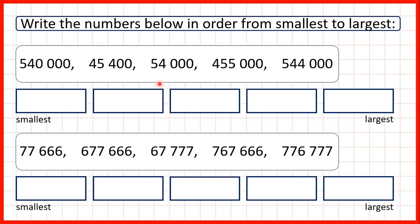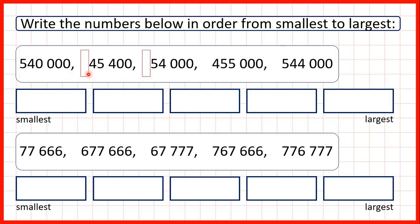Now here we're comparing whole numbers, and when we're comparing whole numbers, numbers with fewer digits are always smaller. So this first number is a six-digit number, but then we have a five-digit number, a five-digit number, and then two six-digit numbers. So we start by comparing the larger place values, but because these two numbers don't have any hundred thousands, we know that one of these must be smallest.